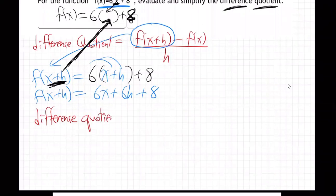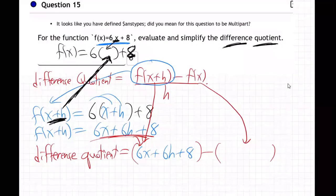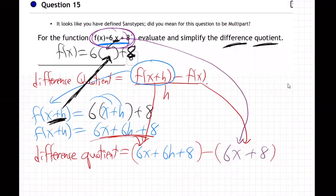Difference quotient will equal, first off, f of x plus h. What's f of x plus h? Well, I just did it right here. It is 6x plus 6h plus 8. And then minus f of x. What's f of x? Well, f of x is the original function given right here: 6x plus 8. All over h.